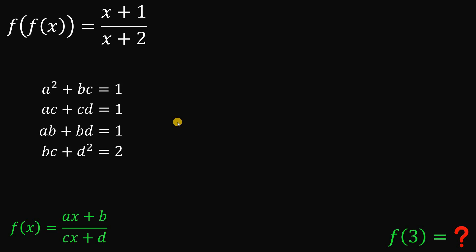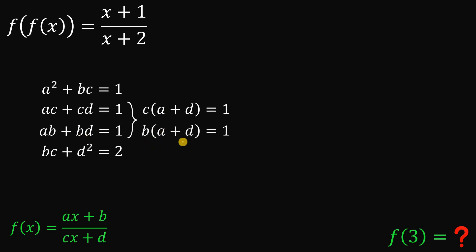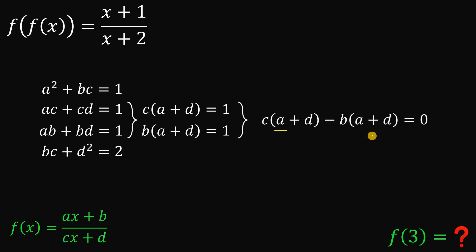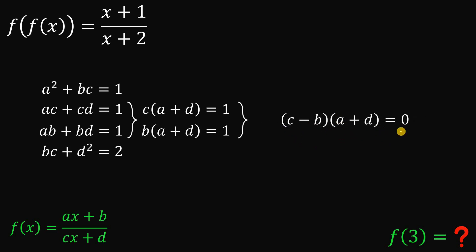Using equations two and three, we factor equation two as c times a plus d equals one, and equation three as d times a plus d equals one. Since both equal one, we equate them, which gives c minus b multiplied by a plus d equals zero. By the zero product property, either c minus b equals zero or a plus d equals zero — giving us c equals b or a equals negative d.